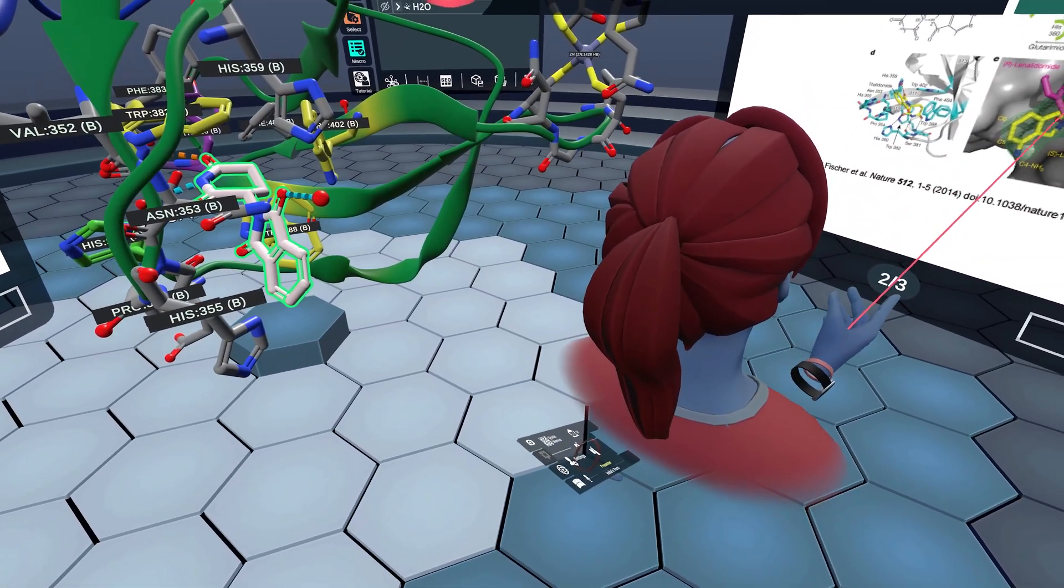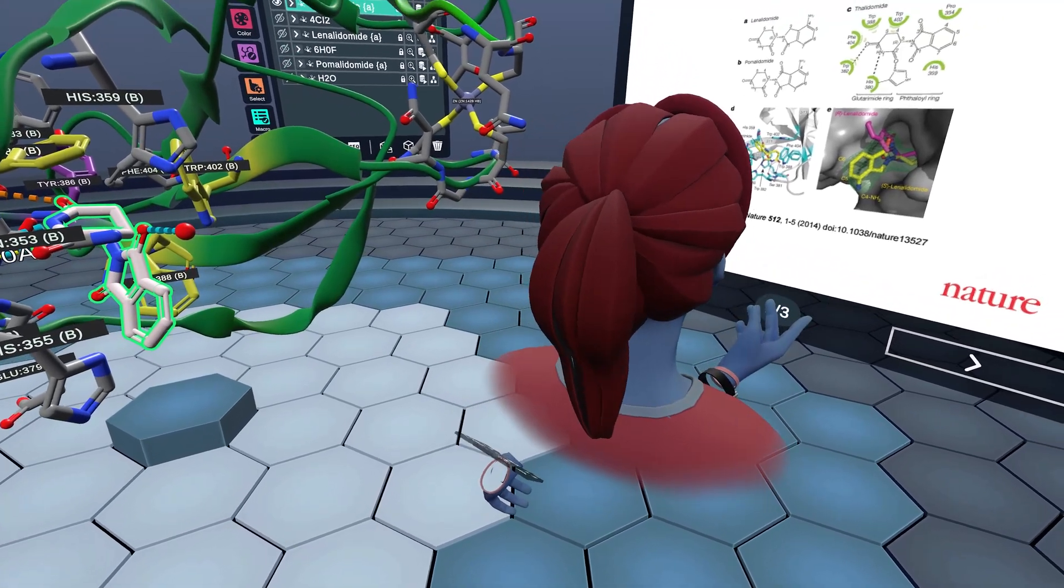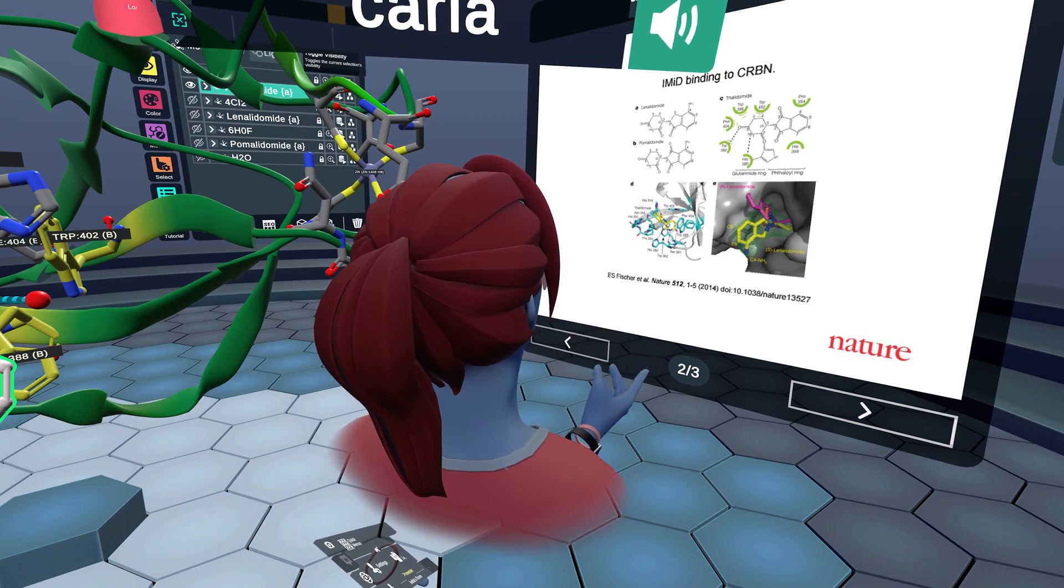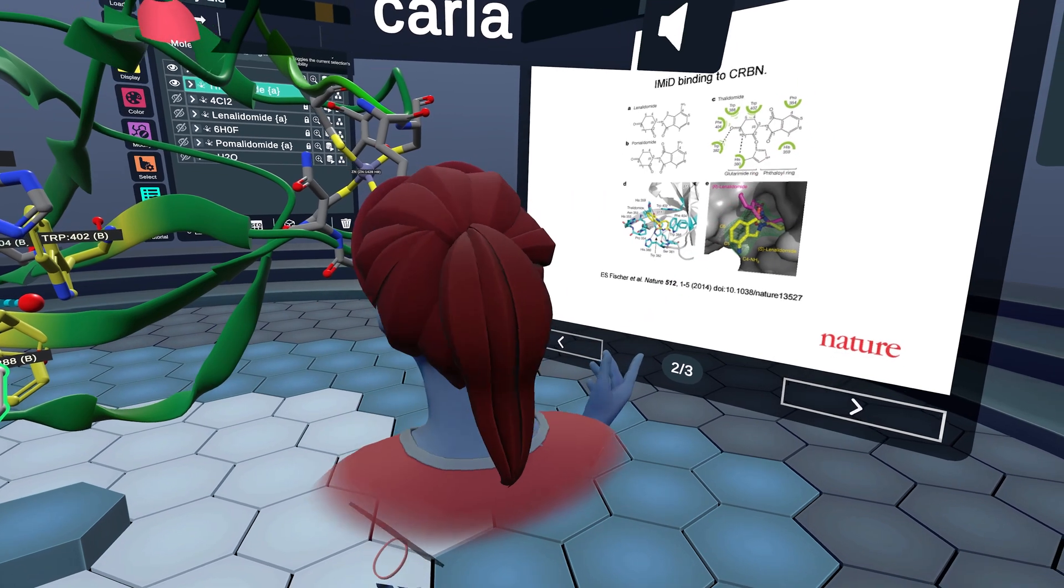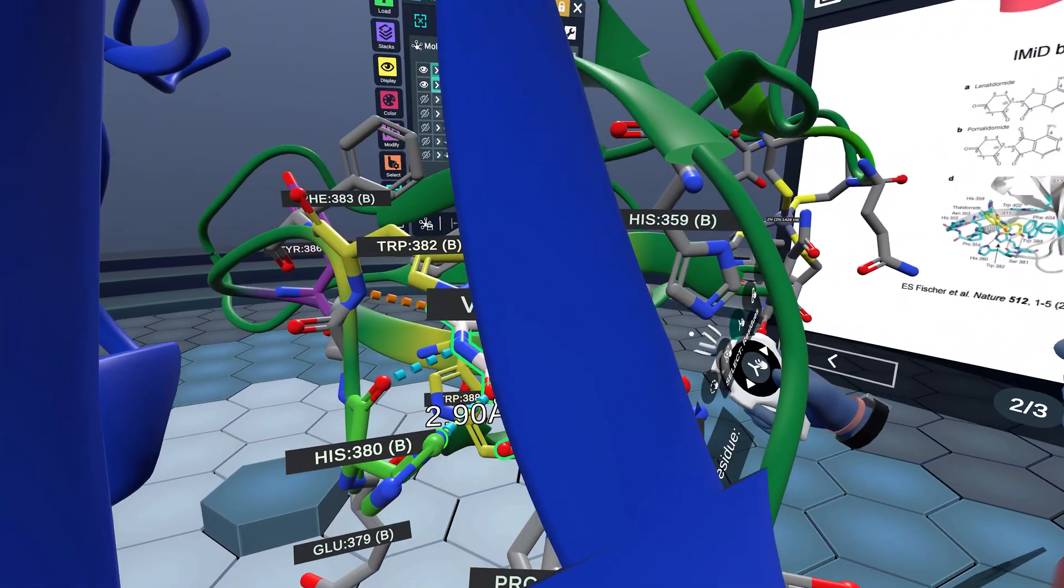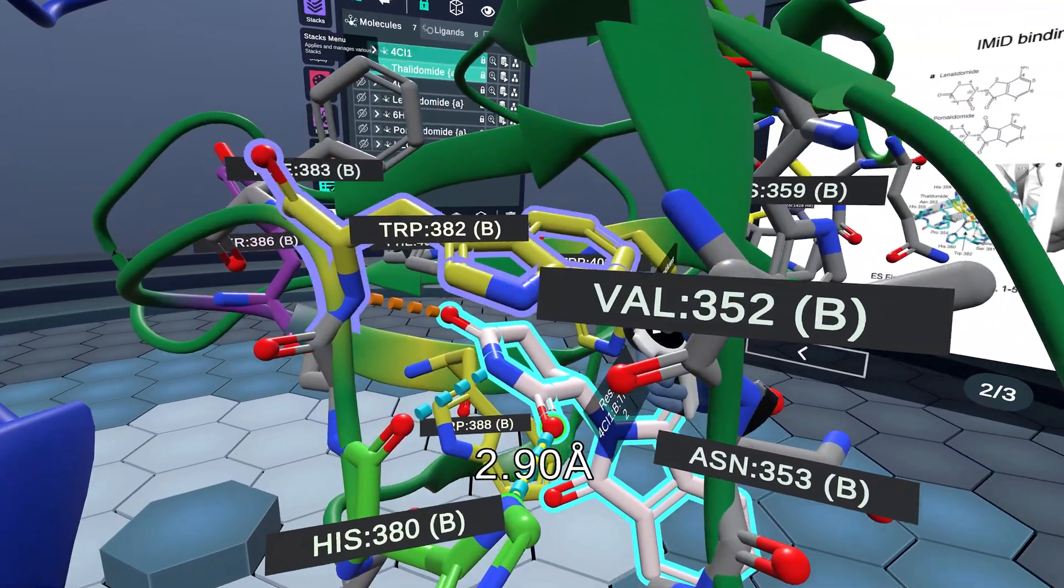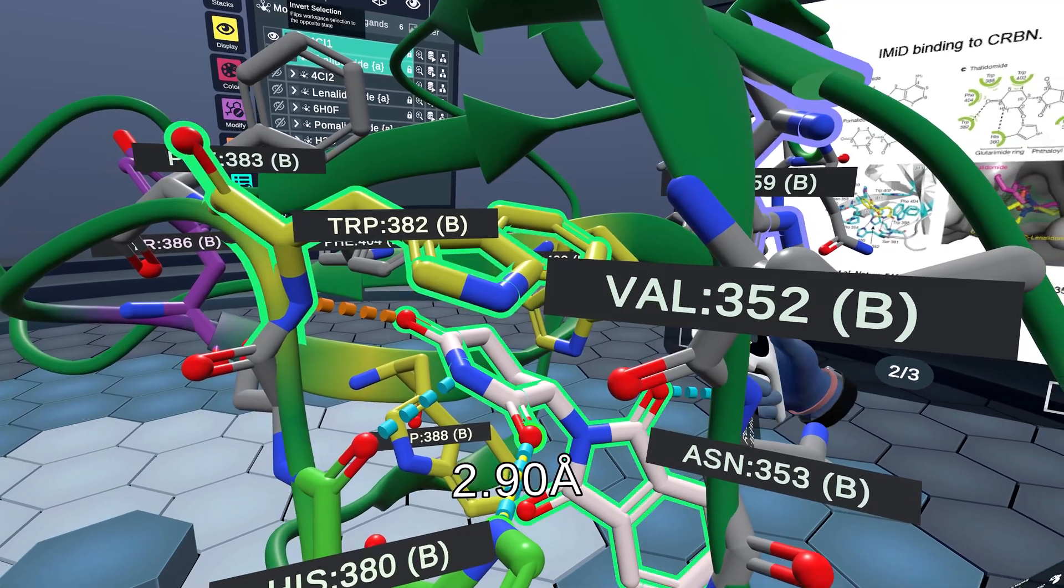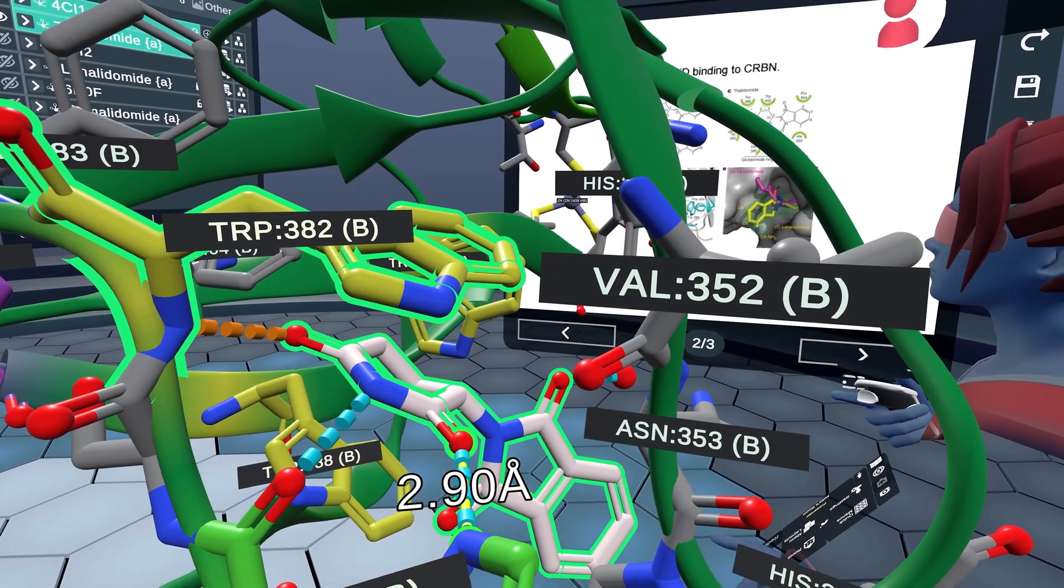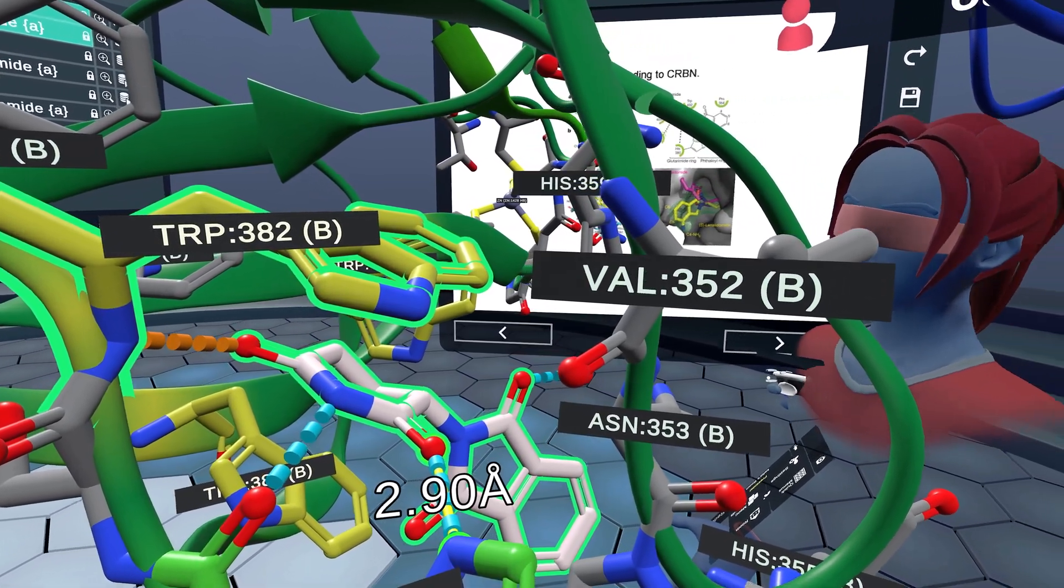Taking a look at this 2D schematic of thalidomide, it's broken up into a glutaramide ring, which forms most of the contacts with cereblon, and a phthalimide ring. Looking at the glutaramide binding site, we see that it's held in place between two beta sheets, and hydrogen bonds are formed between the carbonyls and tryptophan 382, which I've represented in yellow, and the amine NH with the histidine 380 which we pointed out earlier.